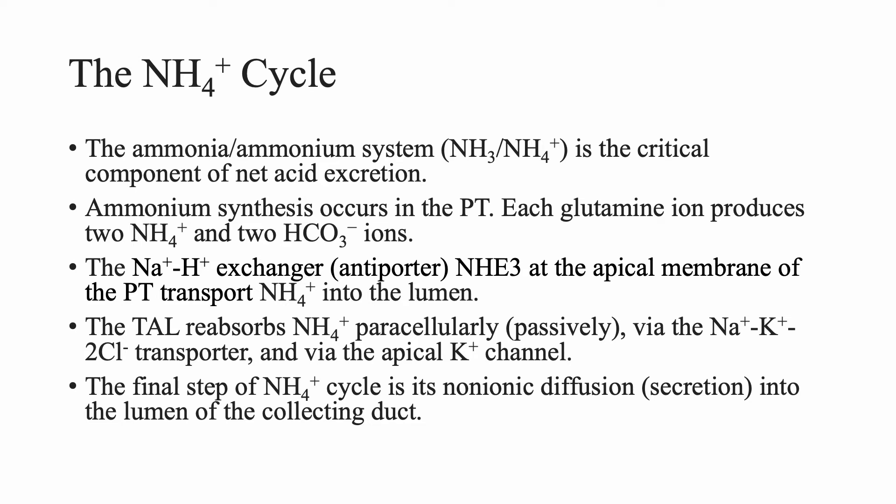Now we have bicarbonate and ammonium inside the cell. The sodium-hydrogen exchanger, or antiporter, located on the apical membrane of the proximal tubule, is going to transport that ammonium into the lumen. The ammonium exits the proximal tubular cell into the lumen. Then the thick ascending limb will reabsorb it — paracellularly and passively — via the sodium-potassium-2-chloride transporter, and to a certain extent by the apical potassium channel. Now inside the thick ascending limb cells, the final step is non-ionic diffusion: ammonium is secreted into the lumen of the collecting duct. This is how we get ammonium into the collecting duct.